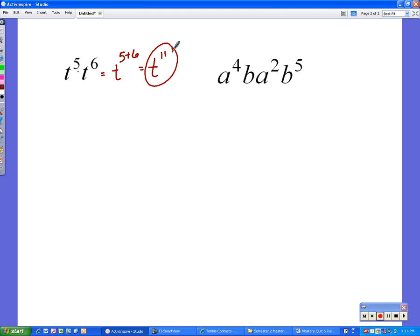This last problem is actually just like the problem with the t's except we have a's and b's. So with the a's let's do those first. We get to add the 4 plus the 2. So we get the base is a and we're adding 4 plus 2. With the b's we actually get to combine them as well. The first b has an invisible exponent, it has an exponent of 1. So we are going to do b to the 1 plus 5. So our final answer is a to the 6th times b to the 6th.